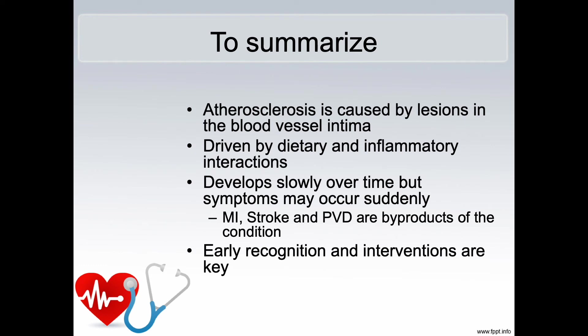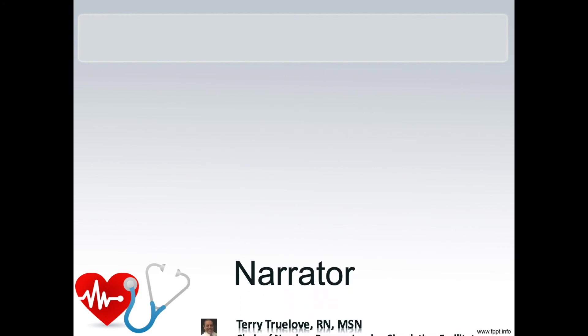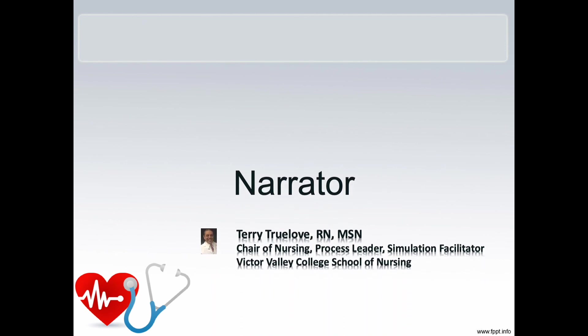To summarize, atherosclerosis is caused by lesions in the blood vessel intima. It is driven by dietary and inflammatory interactions. It develops slowly over time, but symptoms may occur suddenly — for instance, in myocardial infarction, stroke, and peripheral vascular disease, all of which are byproducts of atherosclerosis. Early recognition and interventions are key to treating atherosclerosis. That concludes this episode; more cardiac episodes are pending.